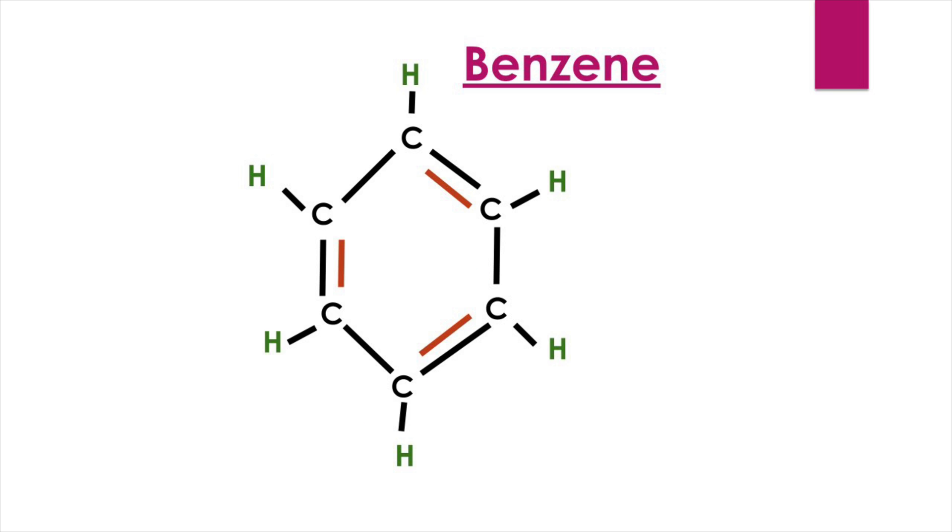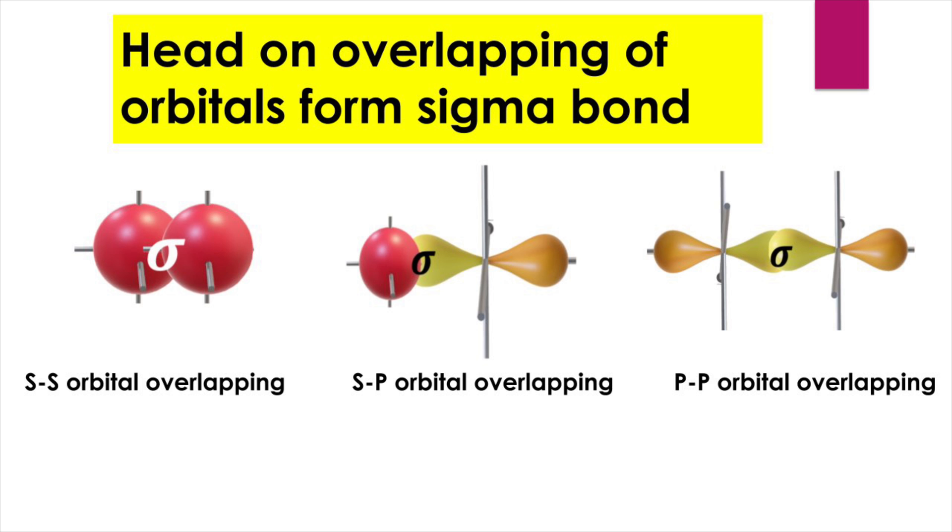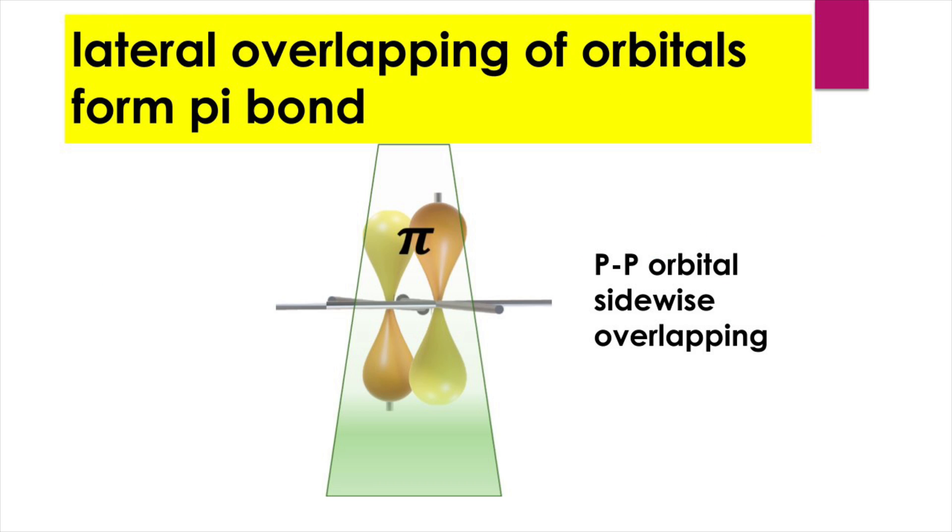Welcome to Aurora chemistry for everyone. Sigma and pi bonds are types of covalent bonds which are formed by overlapping of orbitals. Here let us analyze how to find the number of sigma and pi bonds in benzene molecule.